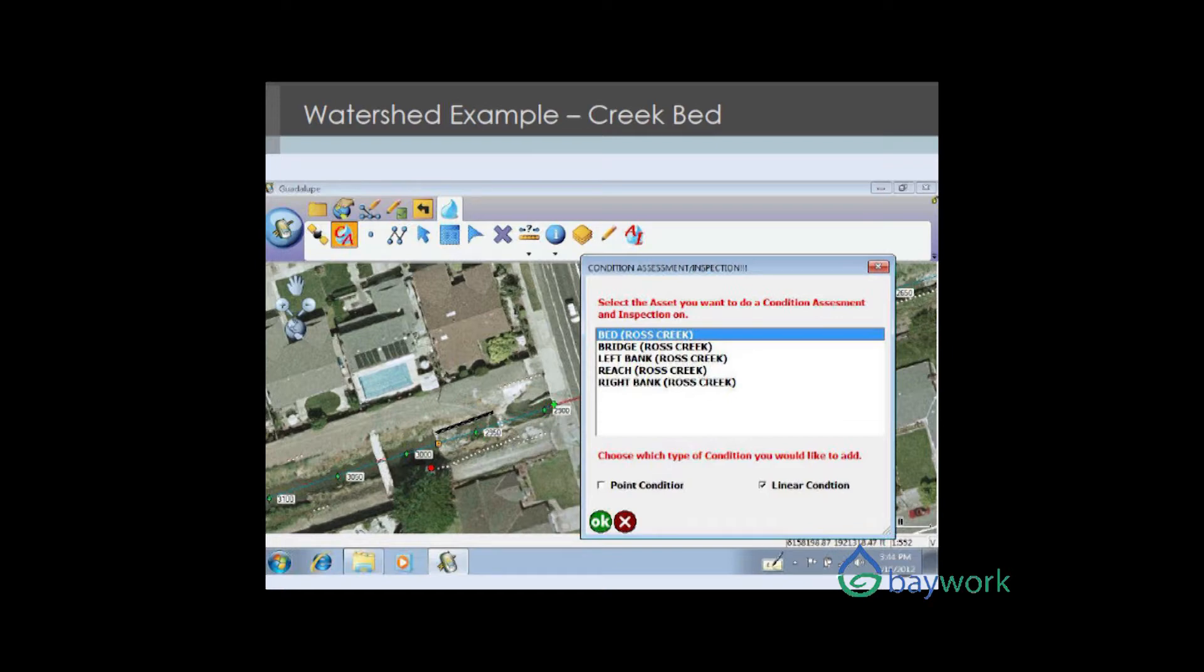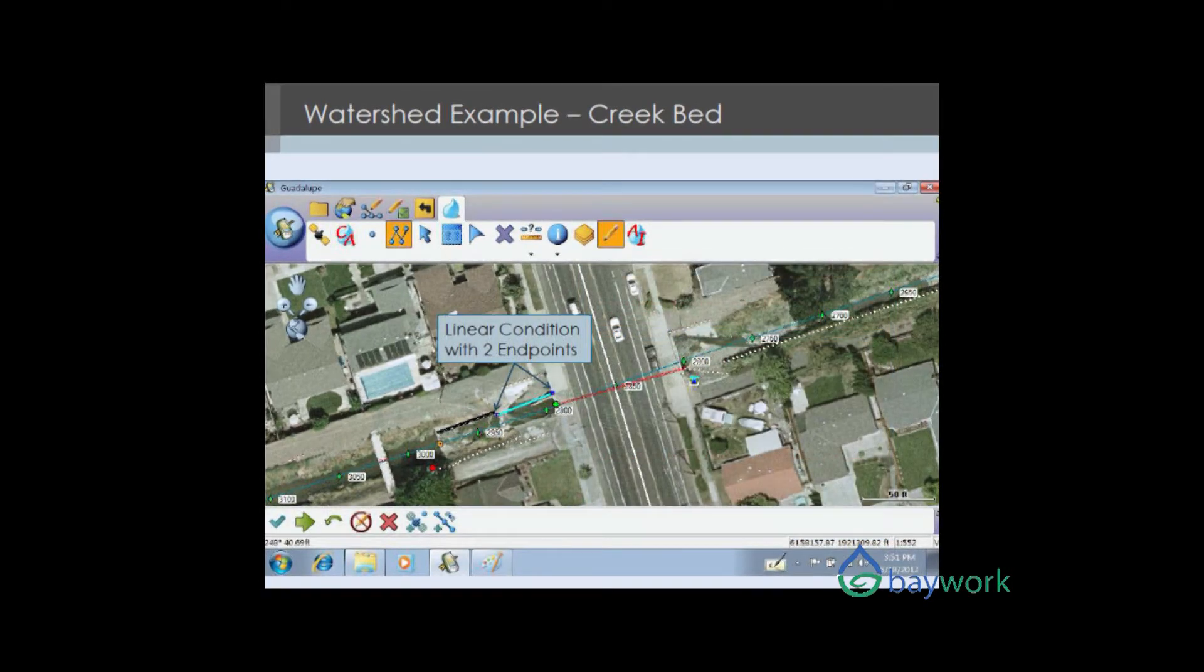When you see all this bank lining, these will show up if it was inventoried. You'll have two different types of conditions that we do. We do point conditions as if it was a pump or something like that, or a spot condition, or you can do a linear condition. When you have a linear condition, this is important because now the regulations require us to say what was the length of impact or the spatial area of impact.